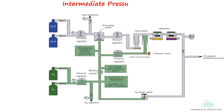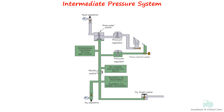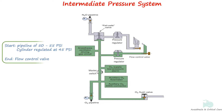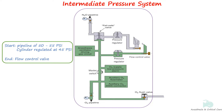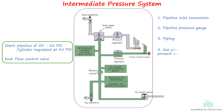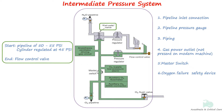The intermediate pressure system begins at the regulated cylinder supply pressure of 45 PSI and also includes the pipeline source at 50 to 55 PSI, extending till the flow control valve. It consists of pipeline inlet connection, pipeline pressure indicator or gauge, piping, gas power outlet (not present on latest machines), master switch, oxygen failure safety device, oxygen flush, and flow control valves.